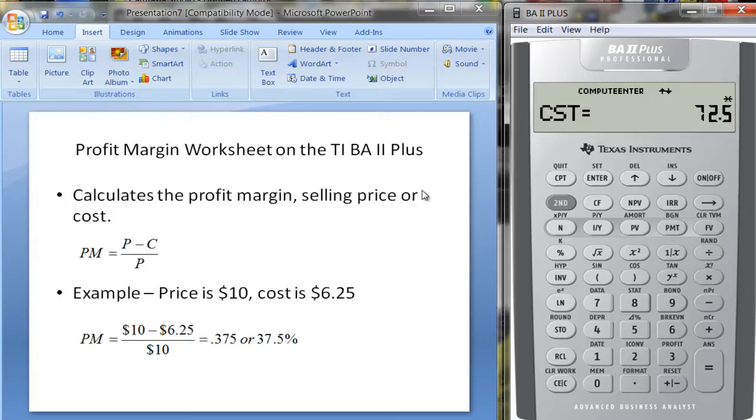And if we're not able to produce it at $72.50 and we want this profit margin of 42%, then this may not be feasible for us to produce.